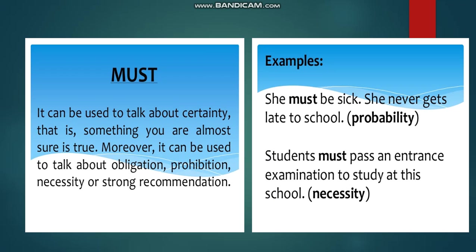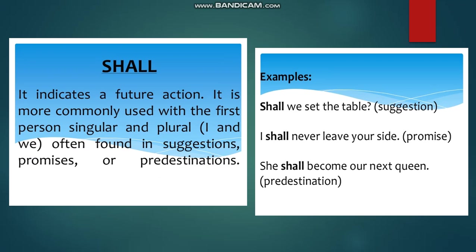'Students must pass an entrance examination to study at this school' — this shows necessity. The next modal is 'shall,' which indicates a future action. It is more commonly used with the first person singular and plural (I and we), often found in suggestions, promises, or predestinations. Examples: 'Shall we set the table?' — suggestion. 'I shall never leave your sight' — promise. 'She shall become our next queen' — predestination.